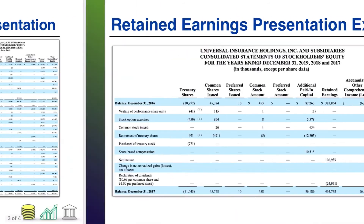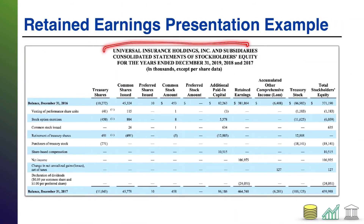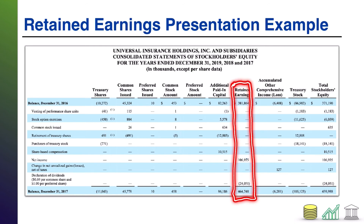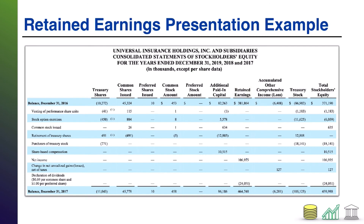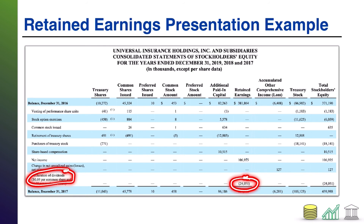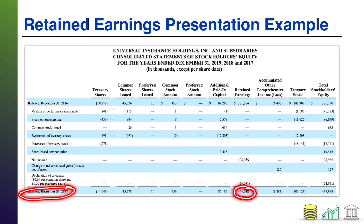Let's take a look at an example. Here we have Universal Insurance Holdings — there's the company name in the header. 'Statement of Stockholders' Equity' is the financial statement name, and it says 'for the years ended,' which is our period of time covered. We're going to focus just on the retained earnings column. The first number is the beginning balance in retained earnings. Then they added their net income. Then they subtracted their dividends — notice the parentheses around that number, which suggest a subtraction. And that equals their ending retained earnings.